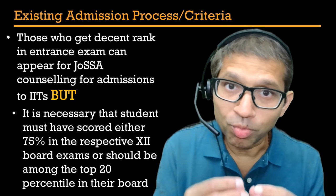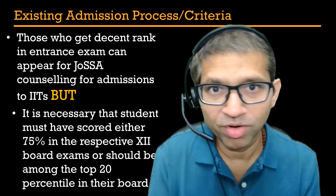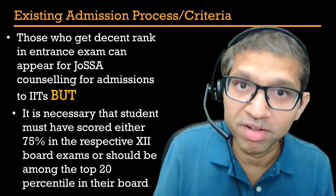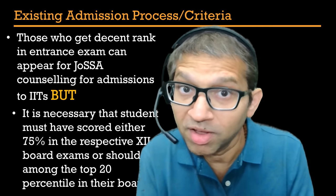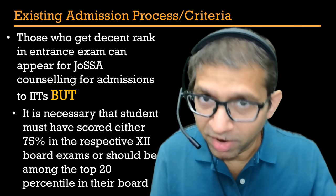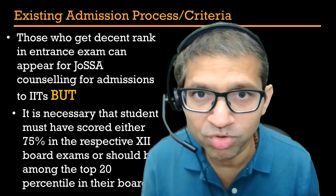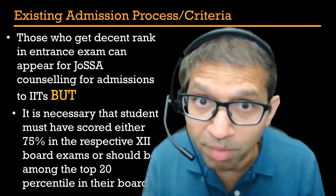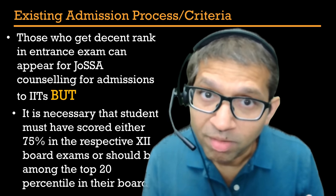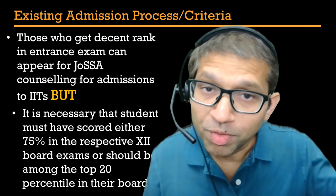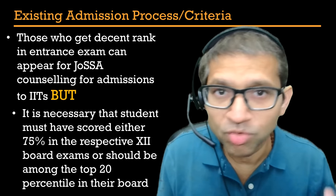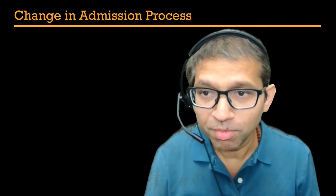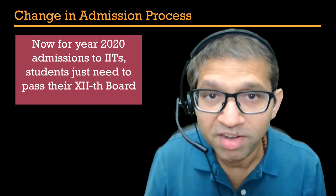There are two criteria: either you score 75% in your board exam, or you are in the top 20 percentile of your board. Because the paper can be easy or difficult, both options are given — absolute 75% or top 20 percentile — which accounts for paper difficulty variation. This is a good provision.